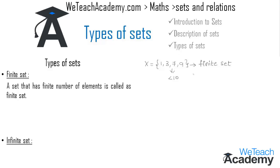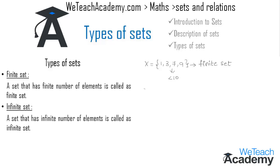An infinite set is a set that has an infinite number of elements. For example, consider set Y = {0, 1, 2, 3, 4, ...} and so on. We observe that this is the set of whole numbers. Since there are infinitely many elements in this set, we call it an infinite set.